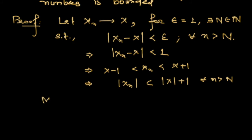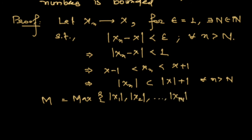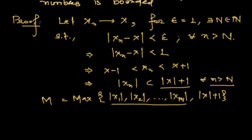Now let M be the maximum of |x1|, |x2|, ..., up to |x_N|, and |x| + 1 for all the remaining terms. Combining these, we can say that |x_n| ≤ M for all n. Hence x_n is bounded.